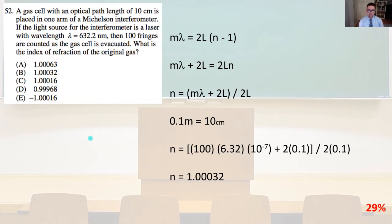So m lambda is going to equal 2L times the quantity n minus 1. And m lambda plus 2L equals 2Ln. So n is going to equal the quantity m lambda plus 2L, that whole quantity, divided by 2L.